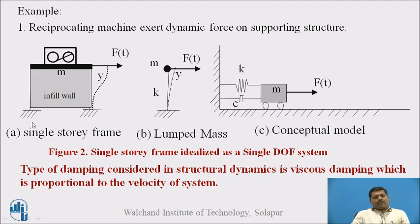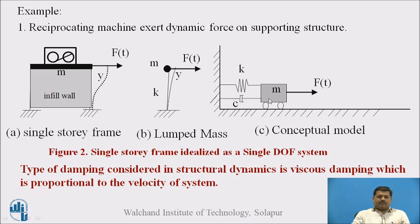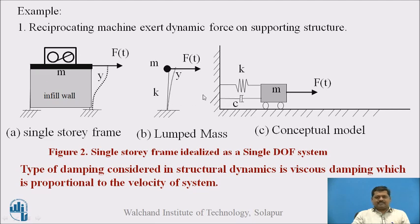The single-story frame is modeled as a lumped mass system. The entire mass of the story, m, is lumped at the top. k represents the stiffness of the two columns, y is the displacement, and the time-dependent force F(t) acts on the mass. In the conceptual model, mass is represented by the wagon wheel, stiffness by a spring k, and damping by a dashpot c.